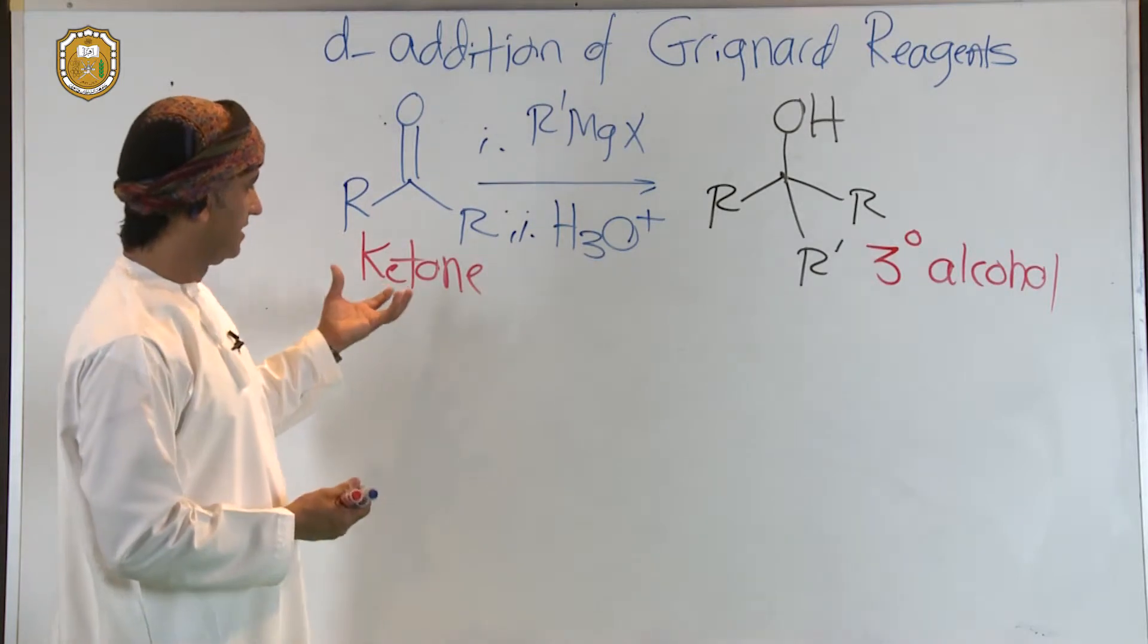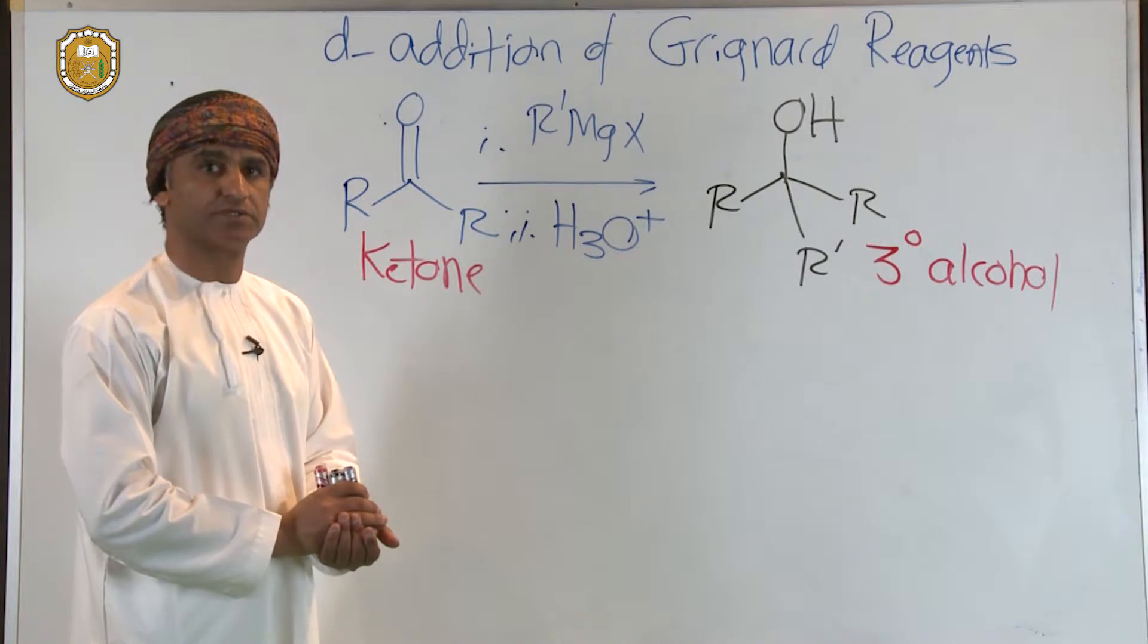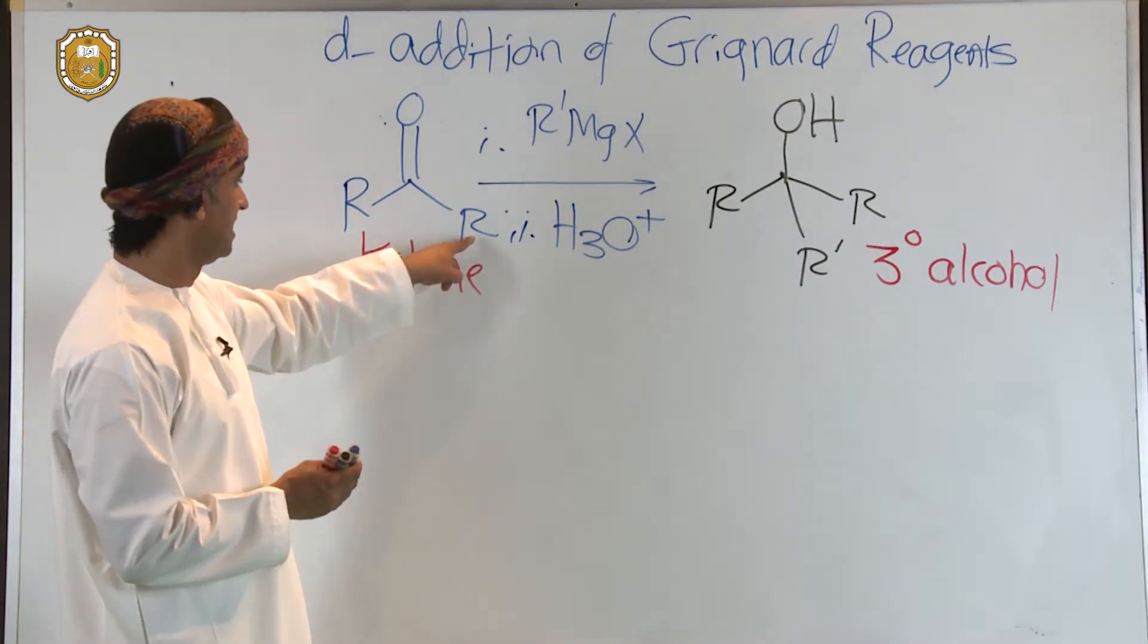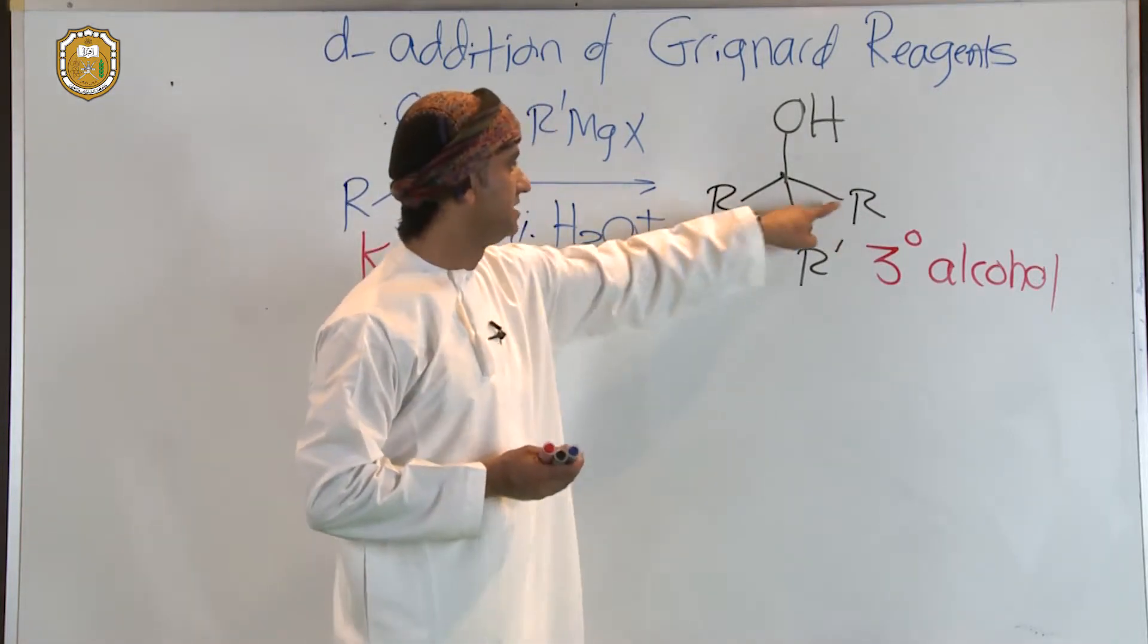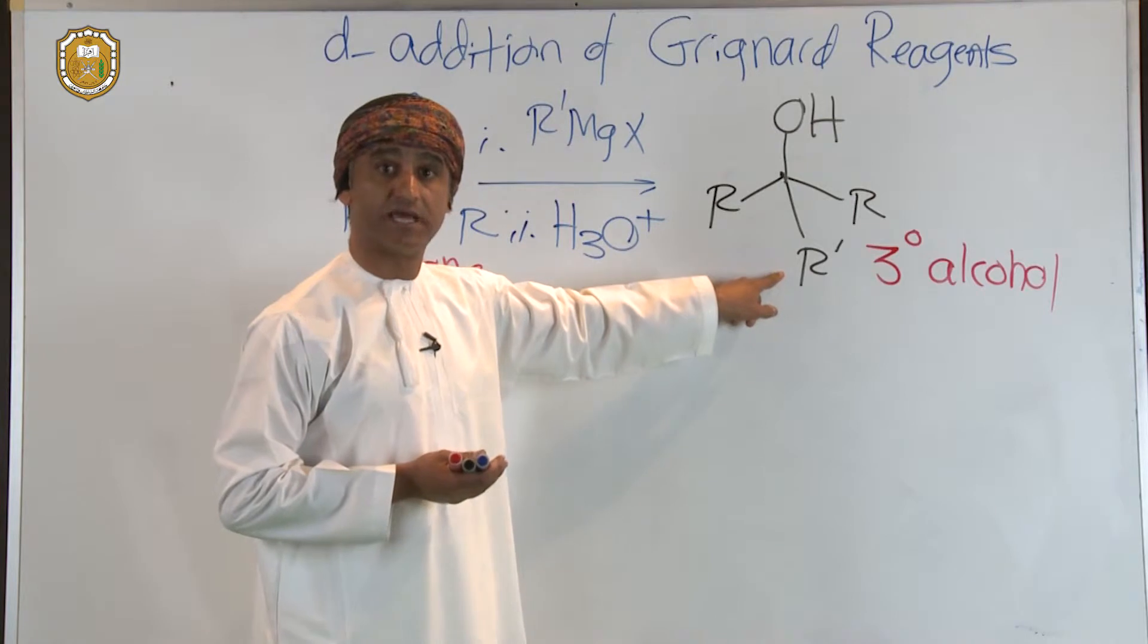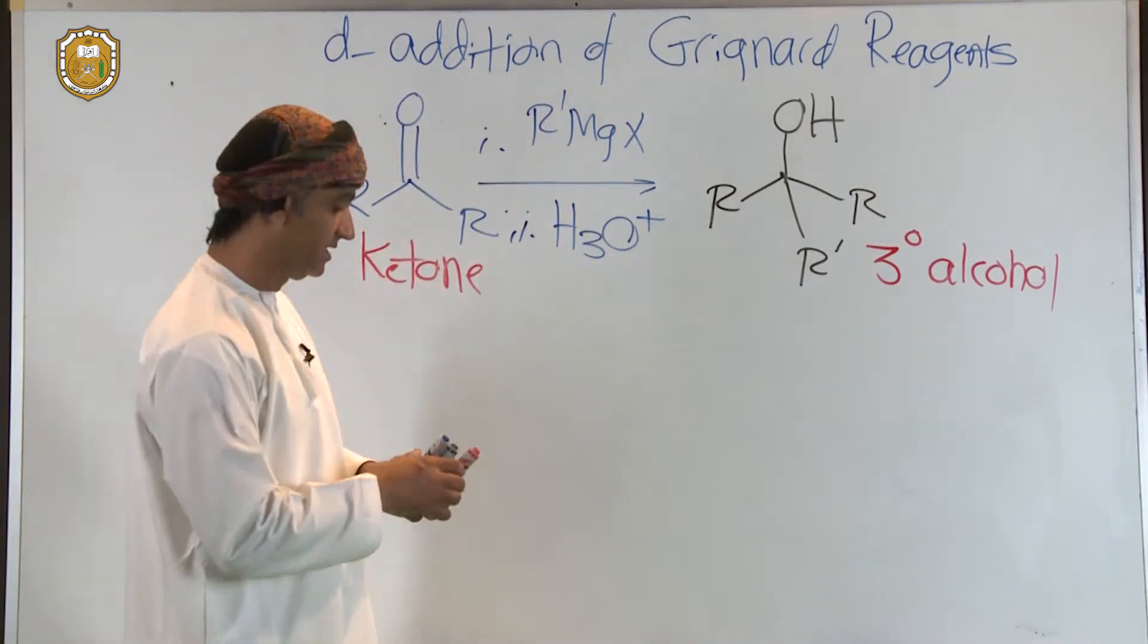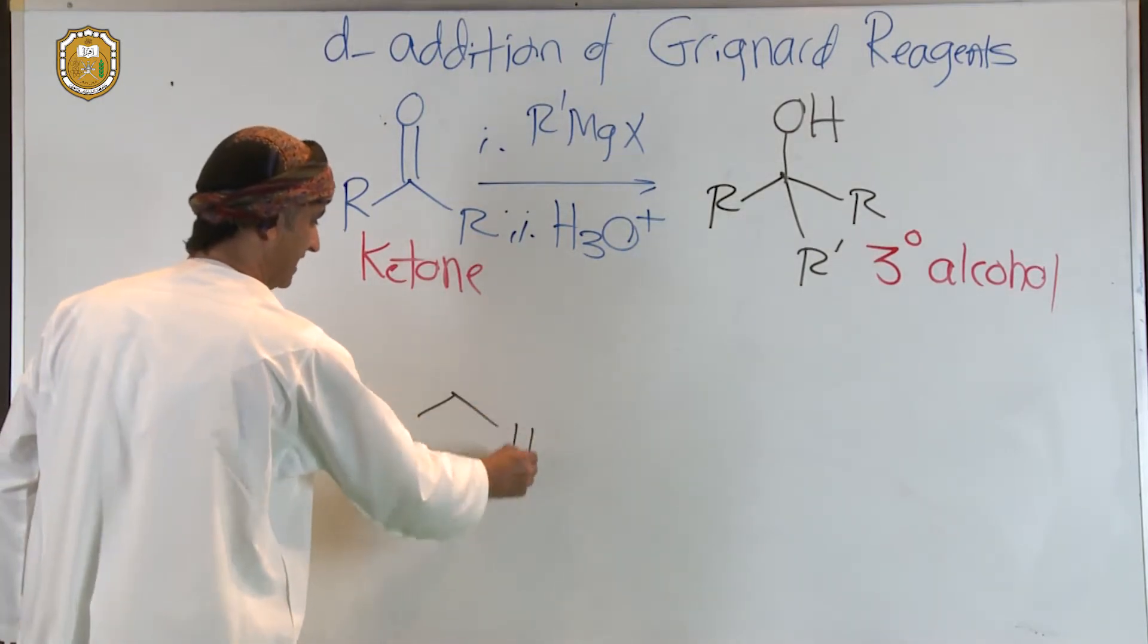So that's basically the reaction of ketones with Grignards in order to form the corresponding tertiary alcohol. Please notice that these two groups here come from the ketone, whereas this additional group comes from the Grignard. Grignard reagents also react with formaldehyde.